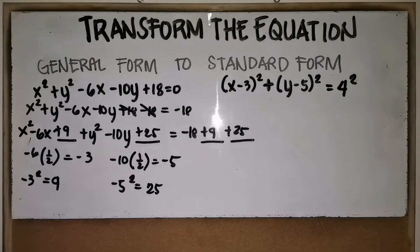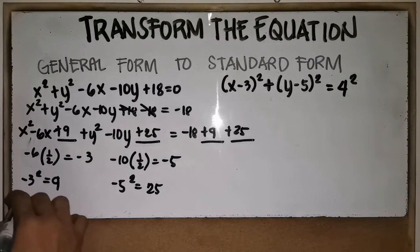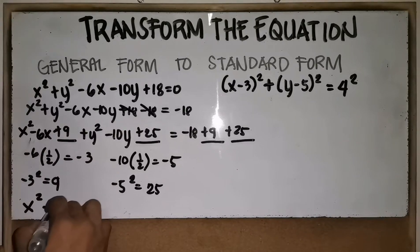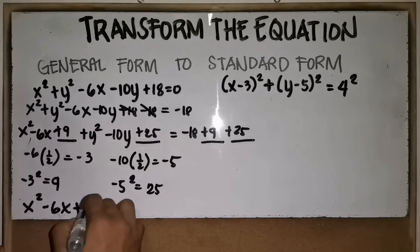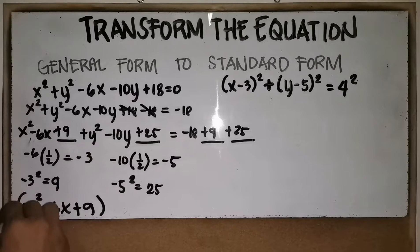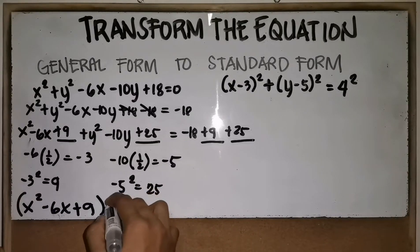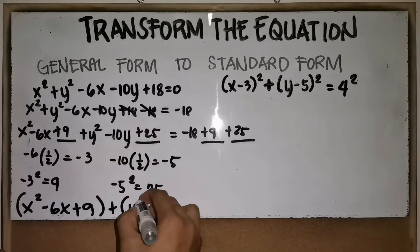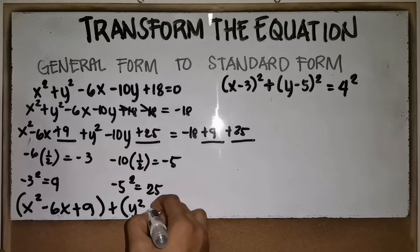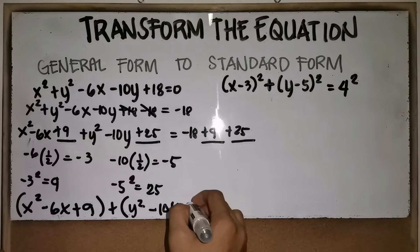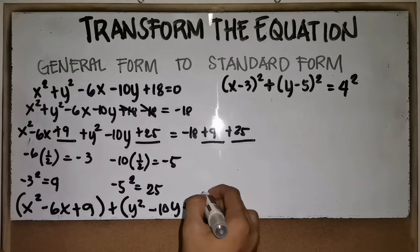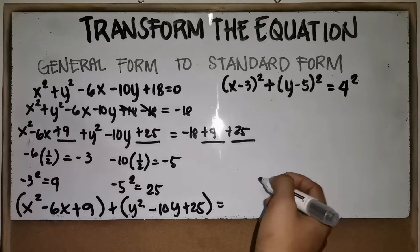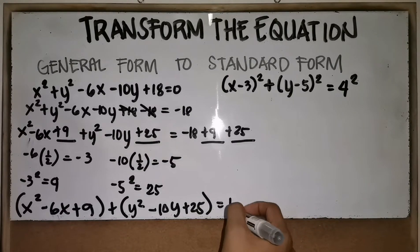Now let's group the perfect square trinomials. We have x squared minus 6x plus 9 — that's one group. And we will have another group: y squared minus 10y plus 25. On the right side, we combine the constants, and that equals 16.